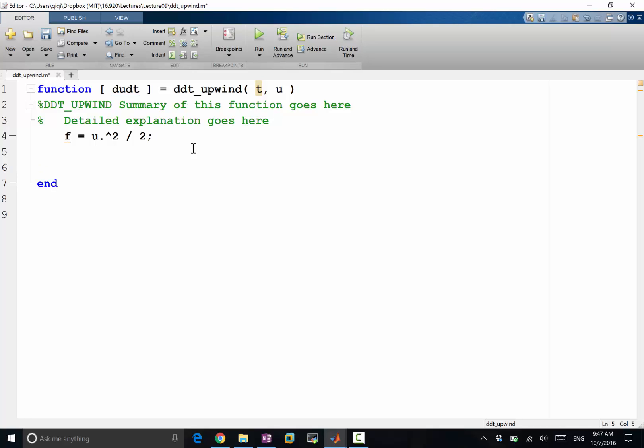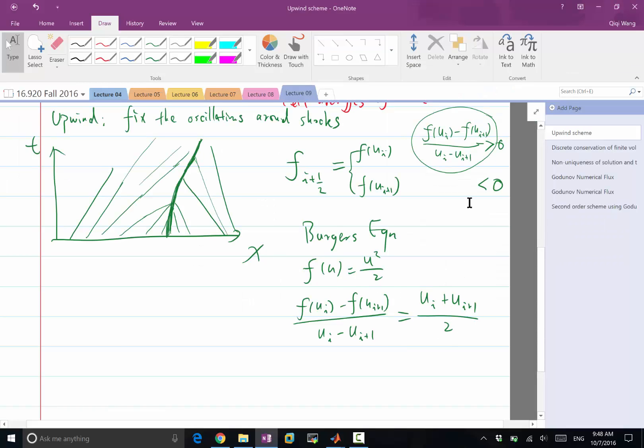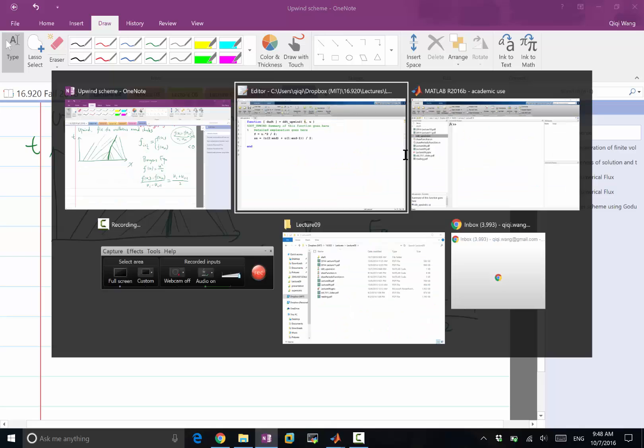The speed of the characteristics or speed of the shockwave, let's say SS, is equal to u of 2 to n plus u of 1 to n minus 1 divided by 2. That's what is going to be deciding if we are going to use upwind or downwind.